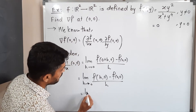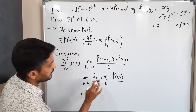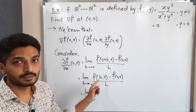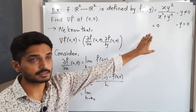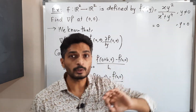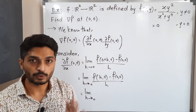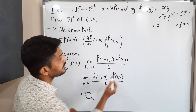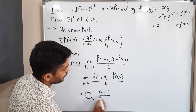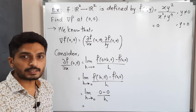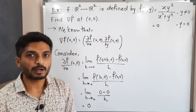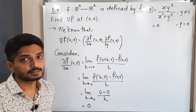This equals limit as h→0. For f(h, 0), the value of x is h and the value of y is 0. Since y equals 0, we follow the second definition, which says the value of the function is 0. Also f(0,0) is 0 since y is 0. So we have (0 − 0)/h = 0. Therefore the partial derivative of f with respect to x at (0,0) is 0.